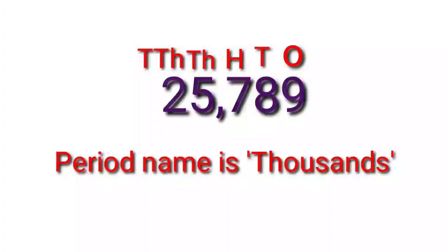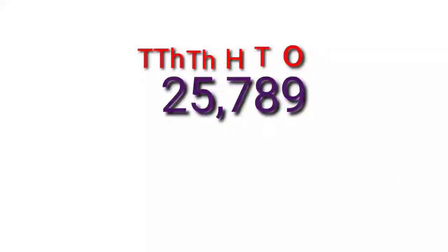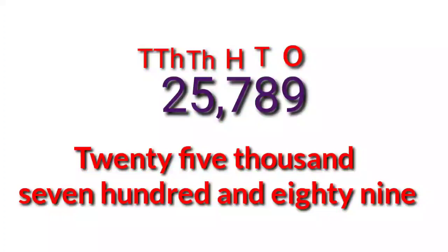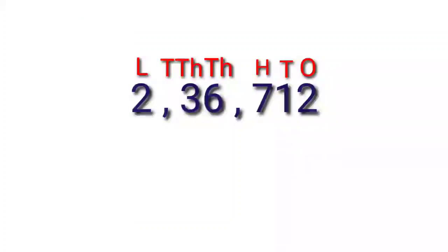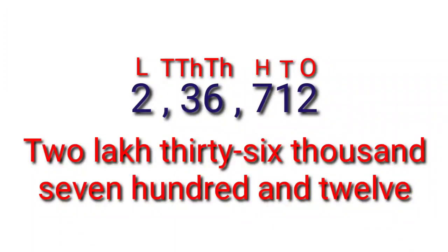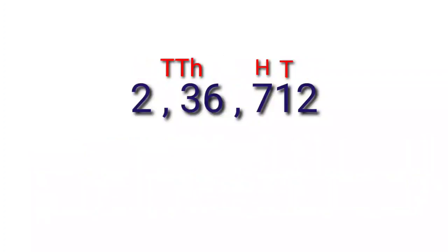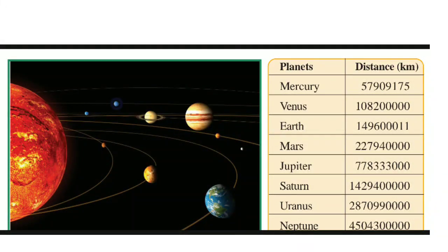Coming to the number name of our number: under the thousands period we have twenty-five, so we read twenty-five thousand seven hundred and eighty-nine. For a six-digit number, the place names are ones, tens, hundreds, thousands, ten thousands, and lakhs. So we can read it as two lakh thirty-six thousand seven hundred and twelve. It is easy now!